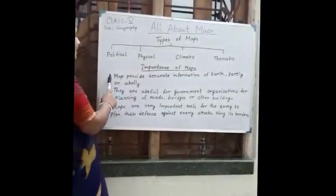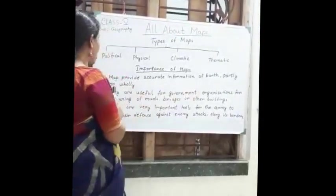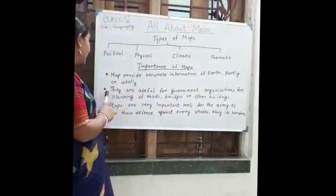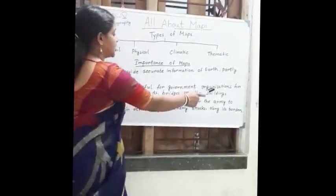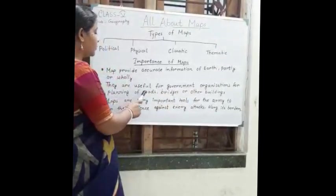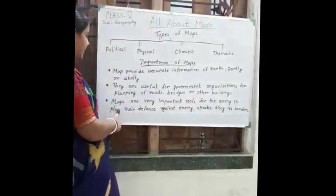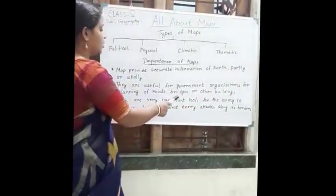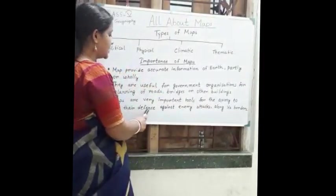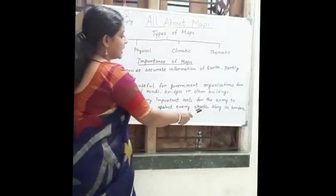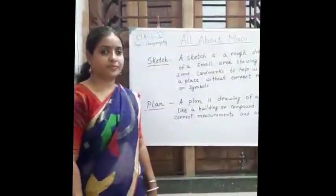Number one, maps provide accurate information of earth partly or wholly. Next, they are useful for government organizations for planning of roads, bridges or other buildings. Maps are very important tools for the army to plan their defense against enemy attacks along its borders.